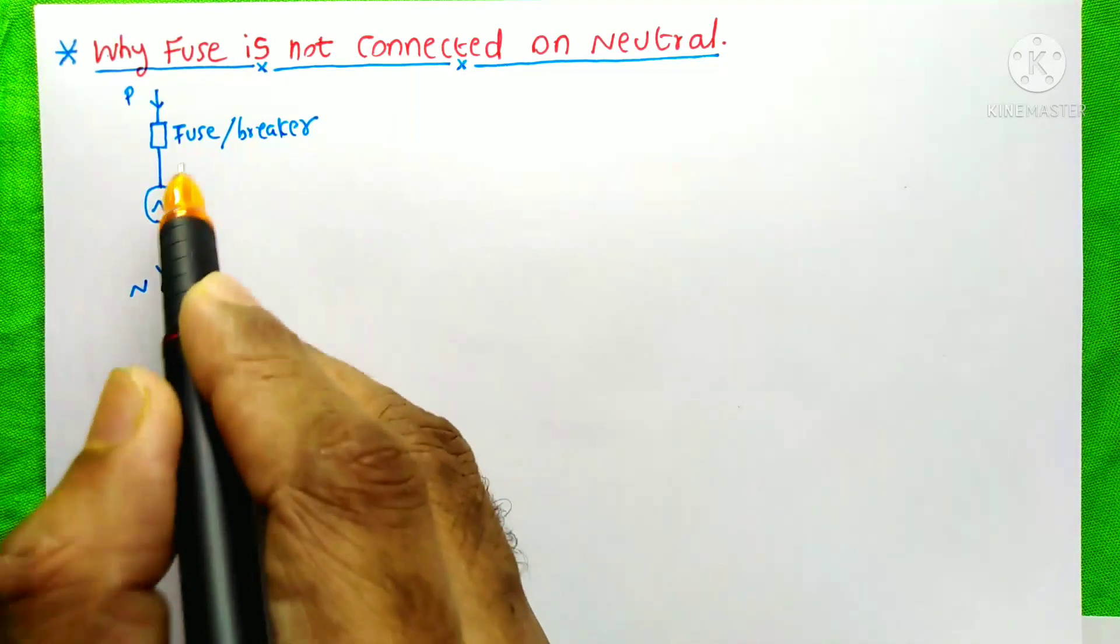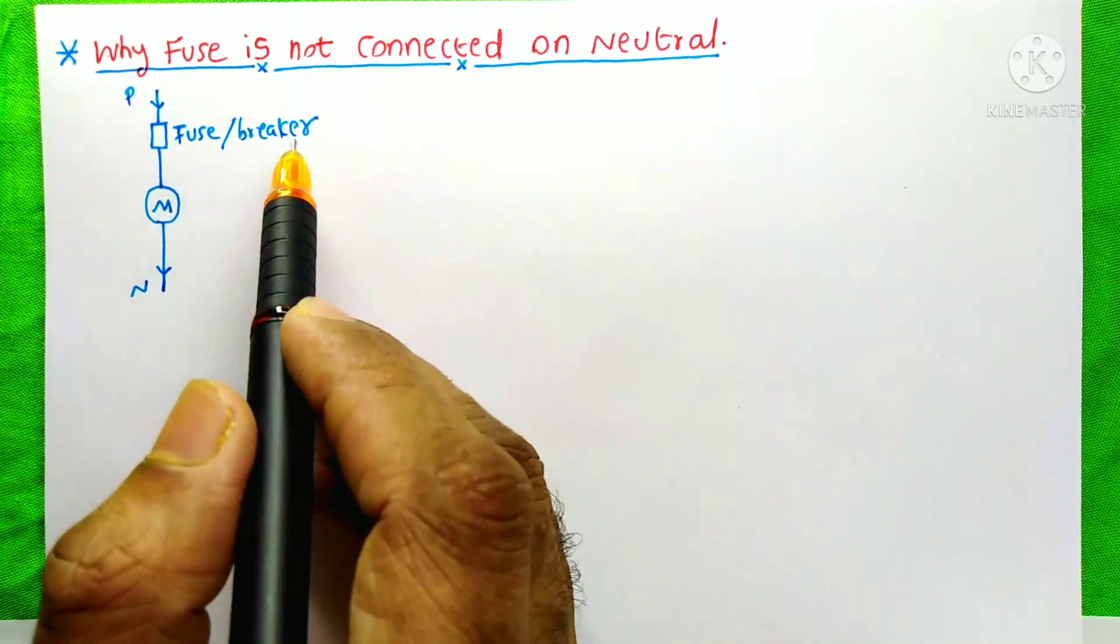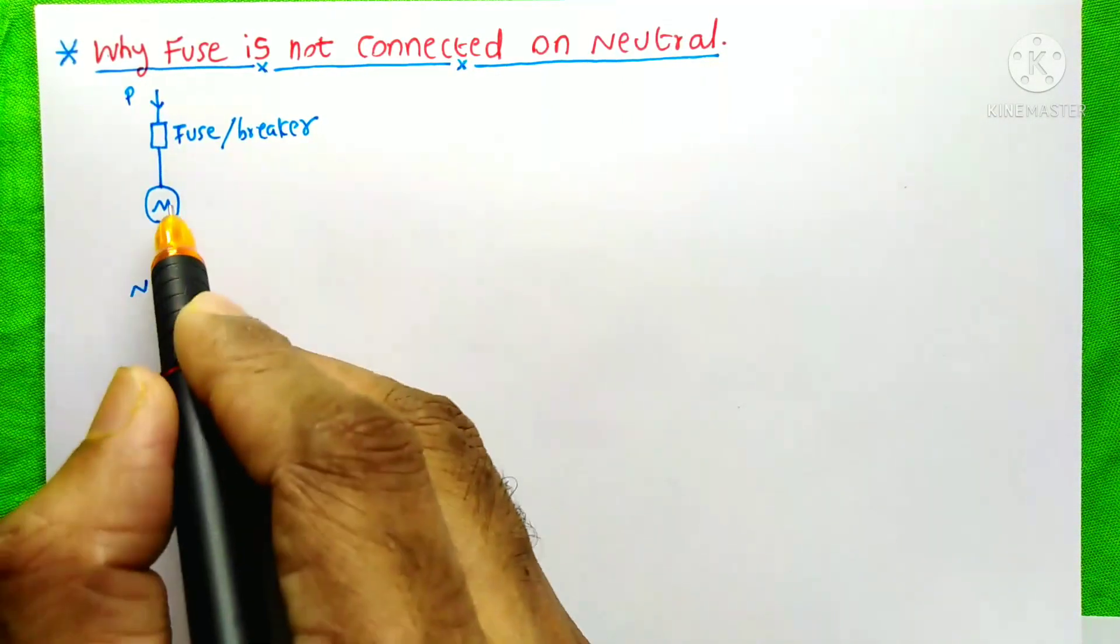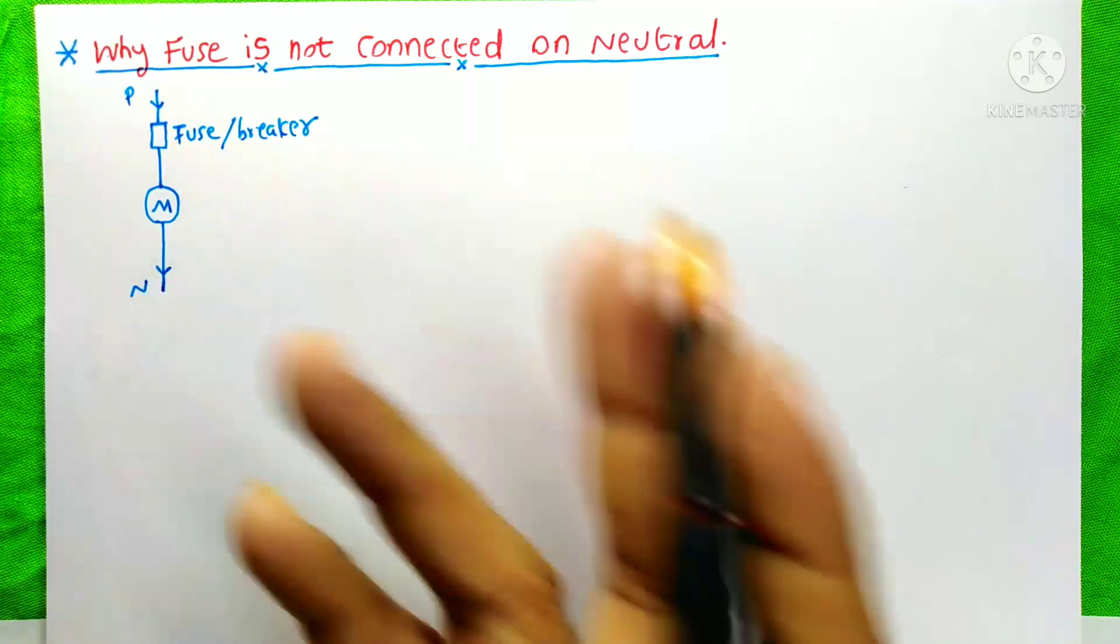We all know that the fuse or the circuit breaker is always connected on the phase and not on neutral. Why it is so?